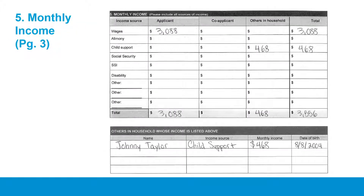Now please turn to page 3 of your application. In Section 5, list all of your monthly income for you, your co-applicant, and any member of your future household who receives income. It is important to include other future household members separately from your own income, because we use all sources of income in different eligibility calculations. Please make sure you list all sources of income you receive and the monthly amount totaled per source.